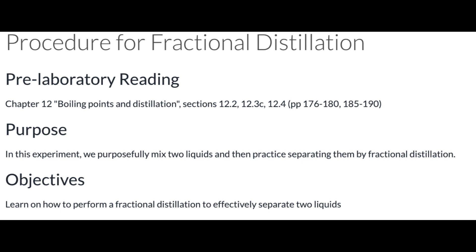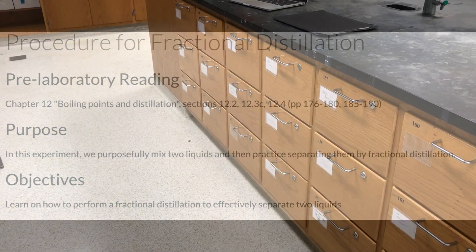In this experiment, we will be separating hexane, which has a boiling point of 69 degrees Celsius, from toluene, which has a boiling point of 111 degrees Celsius.